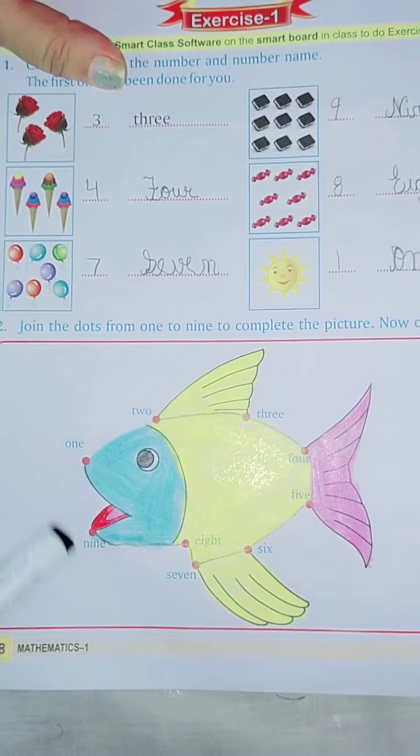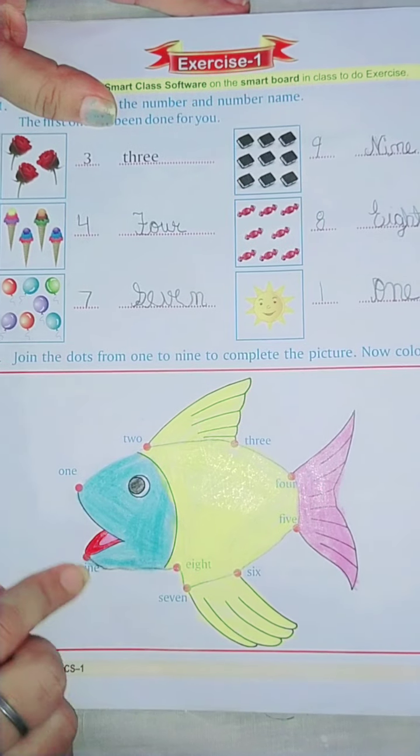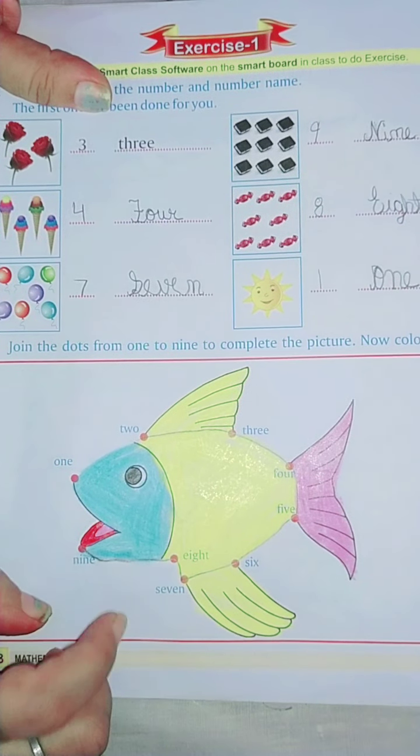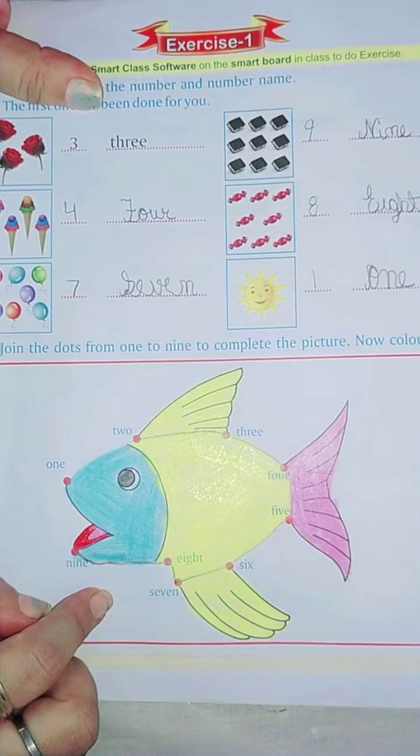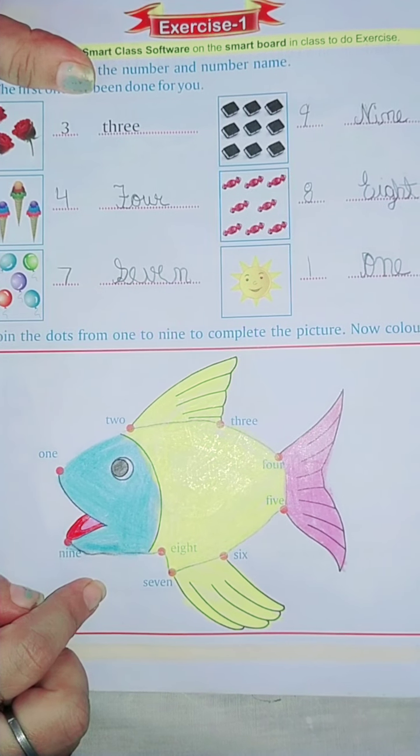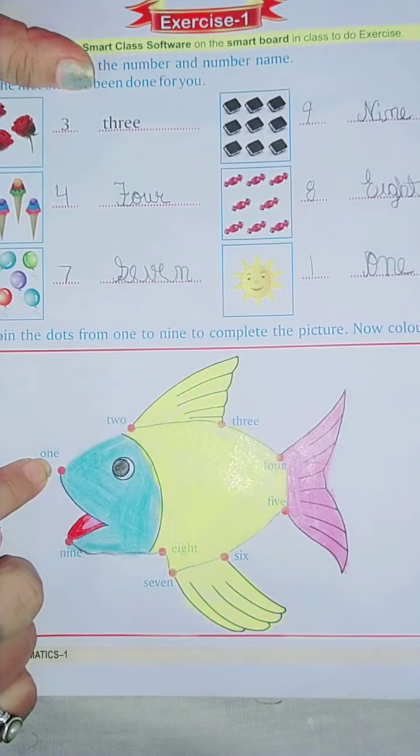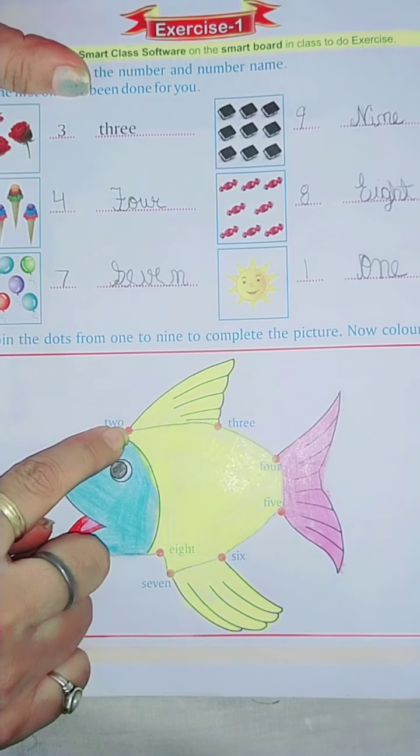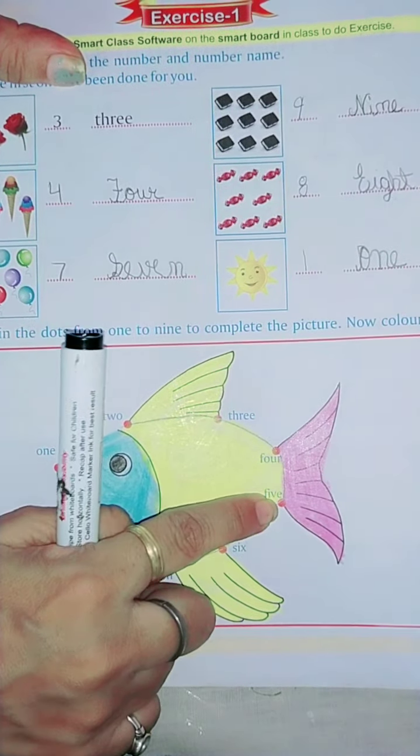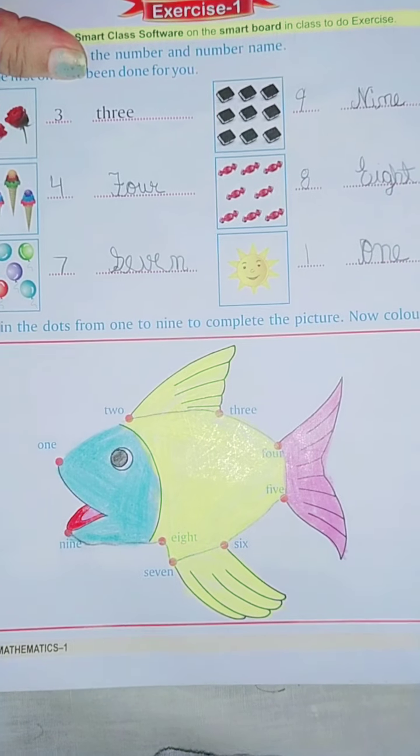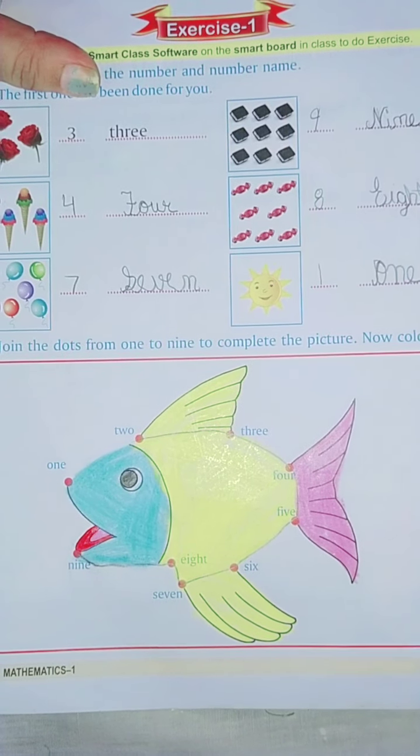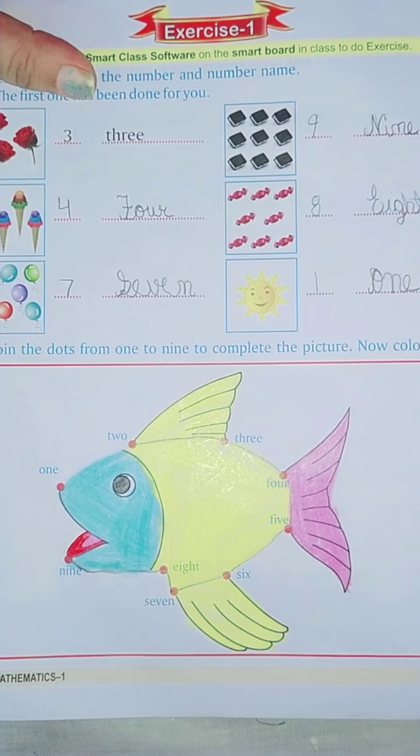Now there is a fish. You have to join the dots and color it in whichever color you want to color it, it is your choice. But join the dots according to number 1, then 2, then 3, then 4, then 5. See the numbers and according to that you join it. Then your beautiful fish will be made.